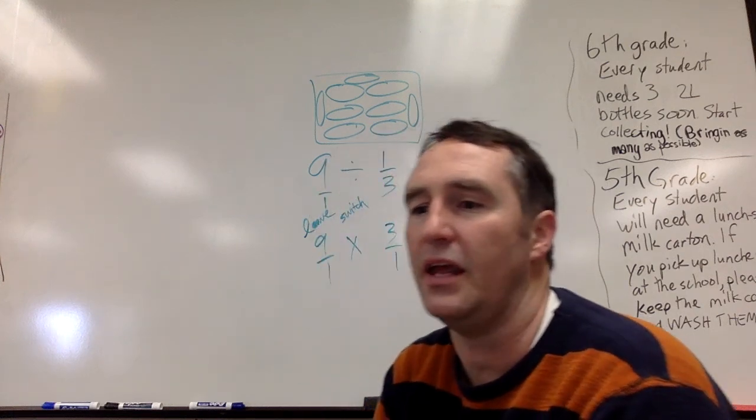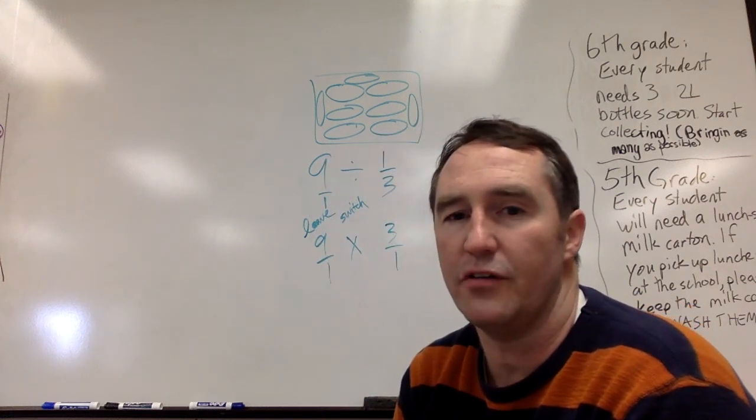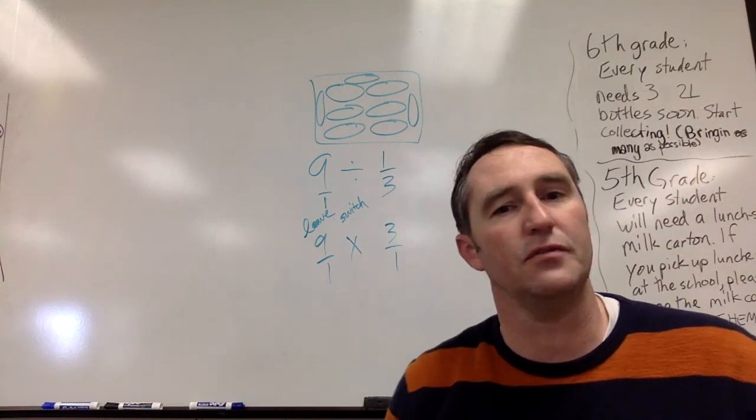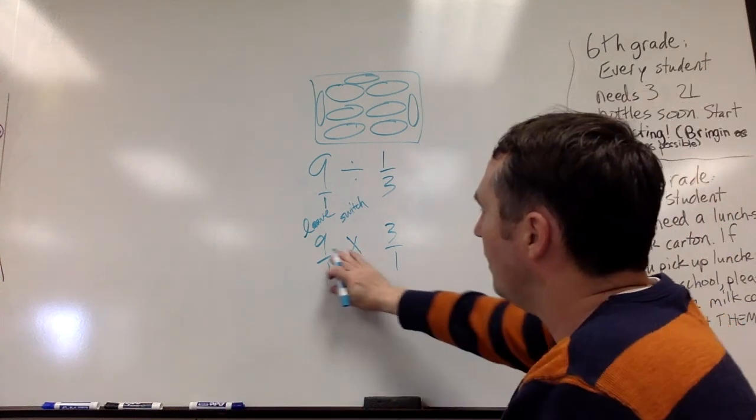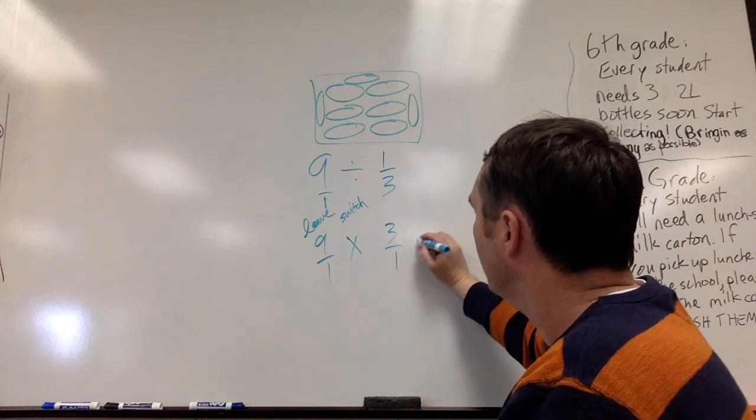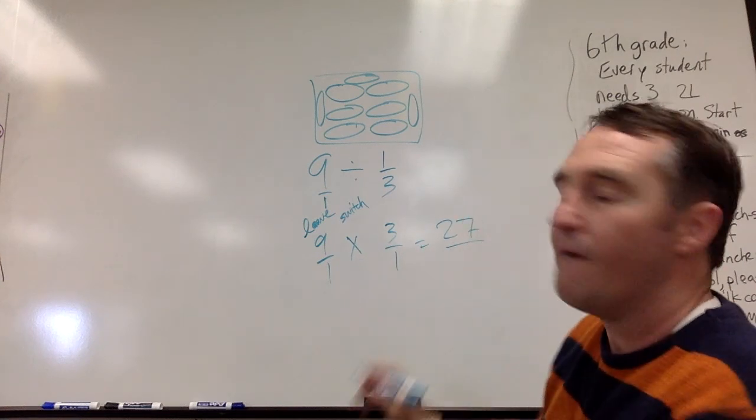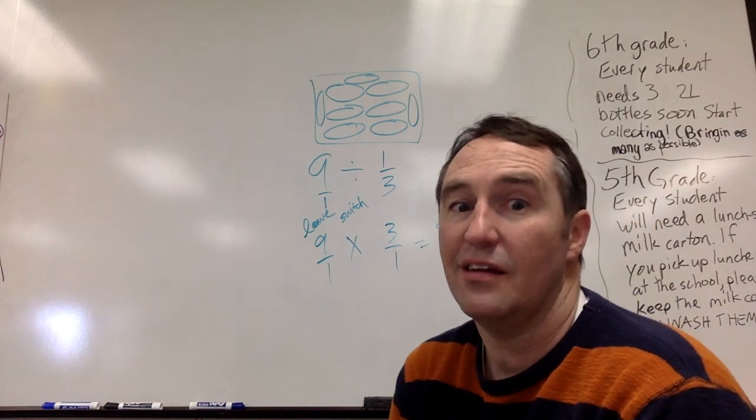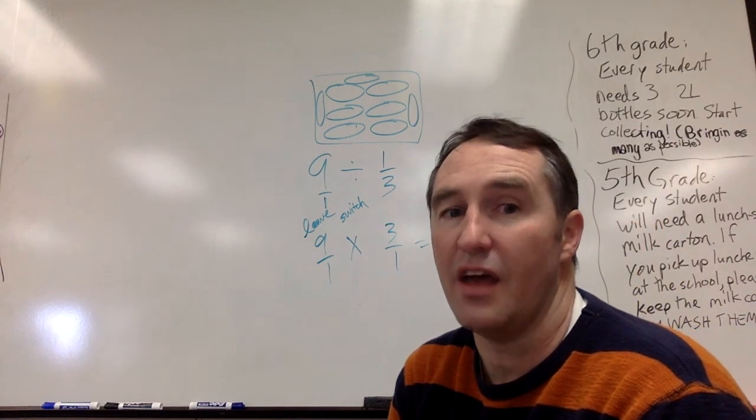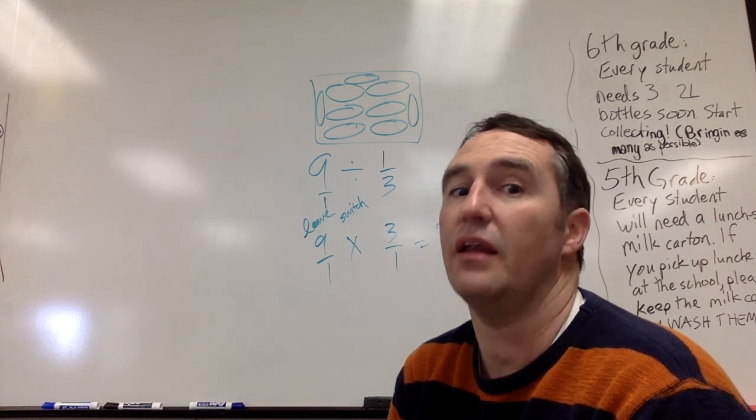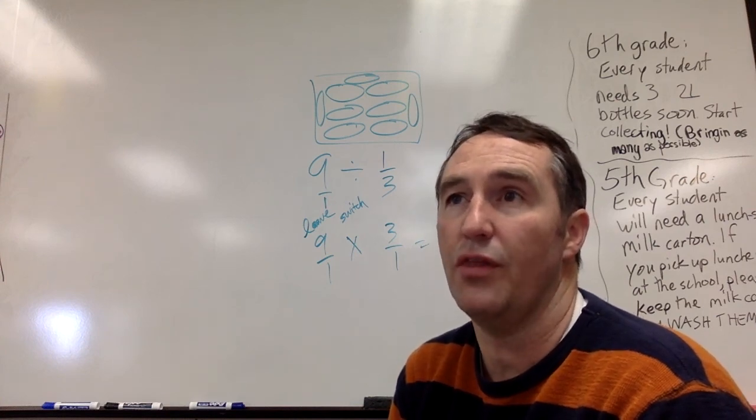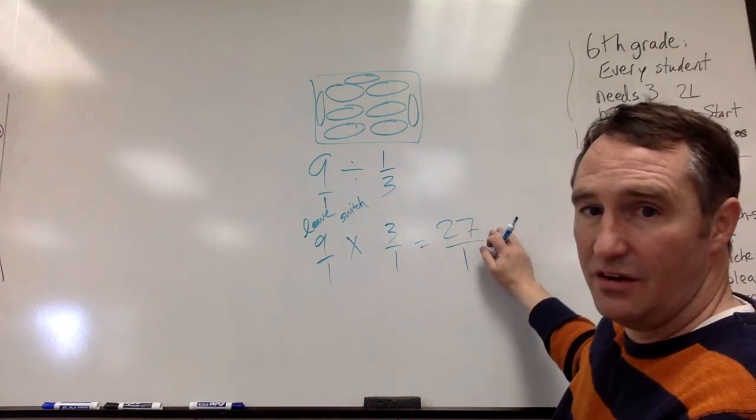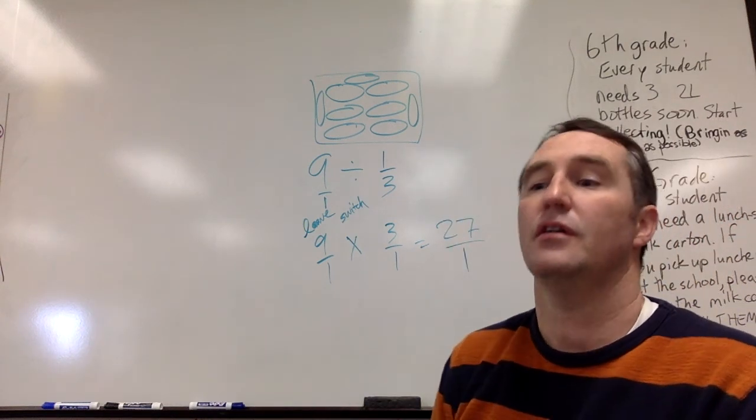The question is how many one-third pound turkey burgers can he make? Now we're just going to multiply fractions as we've learned how to do, multiplying straight across. Nine times three equals twenty-seven over one. Okay, so now that we've got that, if you have nine pounds of turkey burger and you're going to make one-third pound burgers, you can make twenty-seven one-third pound turkey burgers.